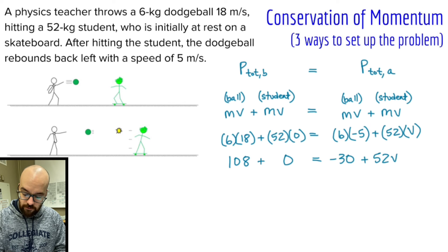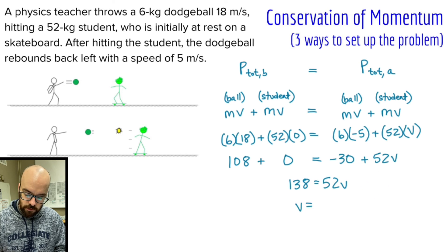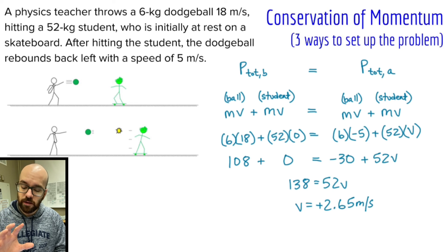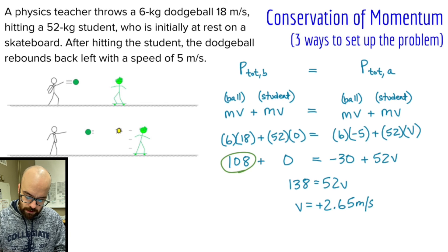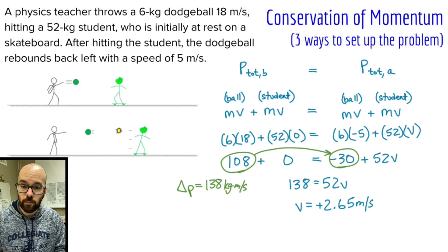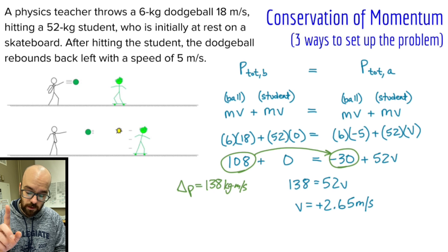Now we do the algebra. I have negative 30 on the right side, so I add 30 to both sides: 108 plus 30 gives me 138, and I have 52V remaining. Divide both sides by 52 and I get a velocity of 2.65 meters per second in the positive direction. Finding the change in momentum: the ball's momentum before is 108 and after is negative 30, so the change is negative 138 kilogram meters per second. The student's change is plus 138 kilogram meters per second.